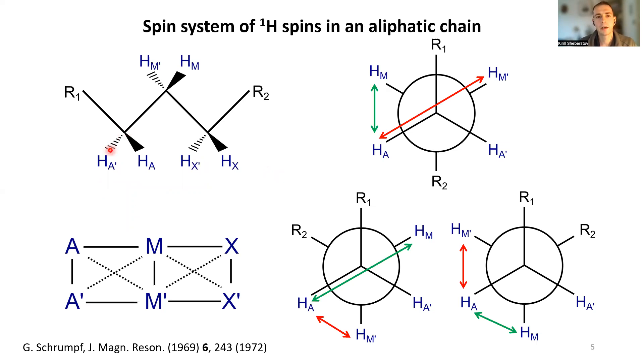Obviously, geminal protons are exactly the same. They are indistinguishable, assuming that there is no chiral center nearby. Now, quite interestingly, this is actually not true for symmetry of spin system.